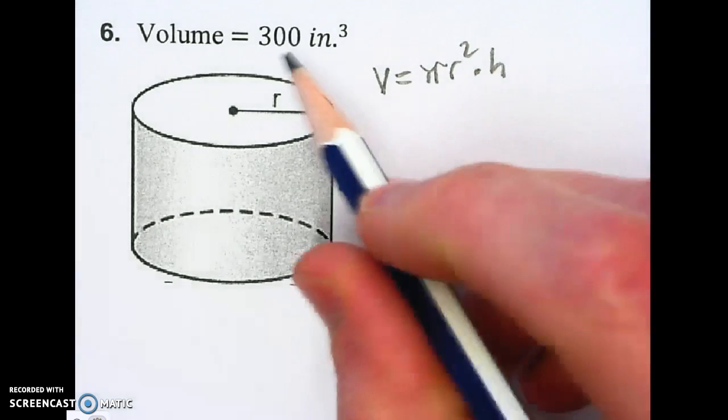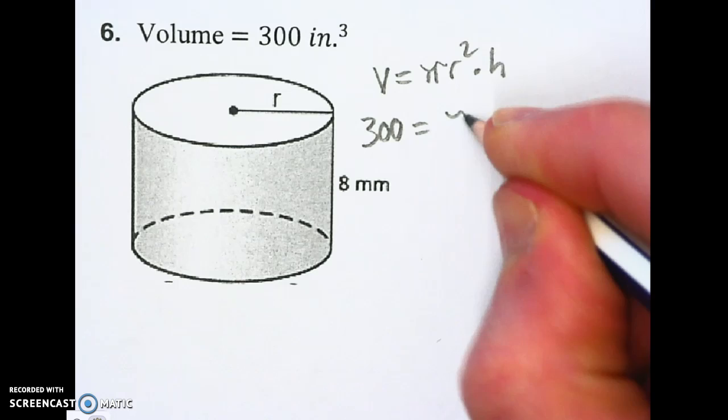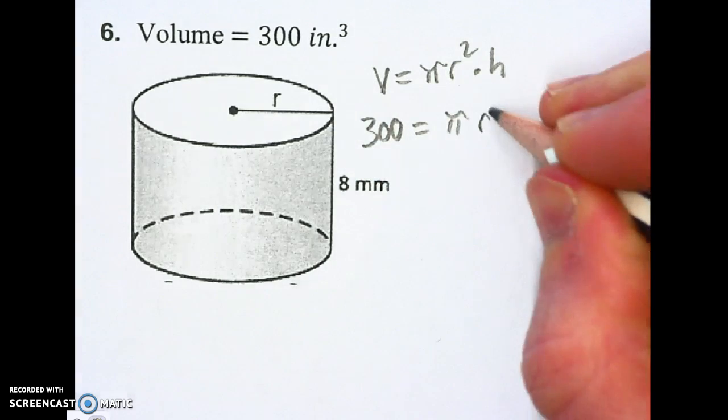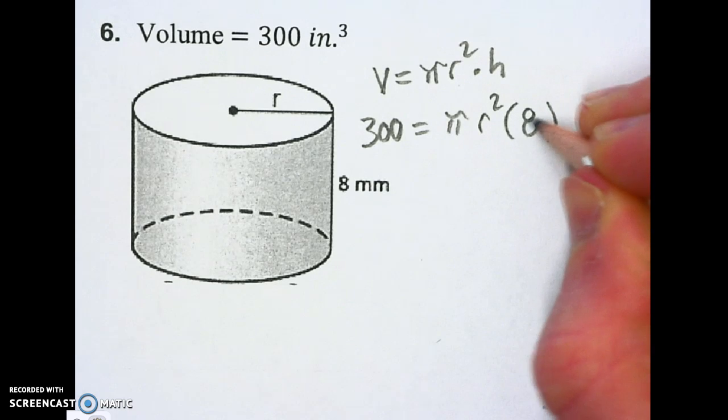So I'm going to fill in the pieces I do know. I do know the volume is 300. I know pi still. I don't know the radius, but I do know the height. So I'm going to put in the height in parentheses, and it's 8.